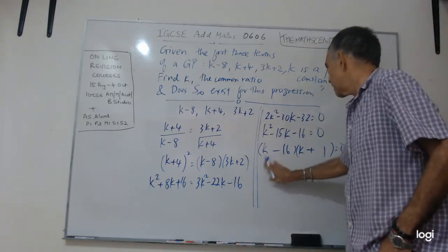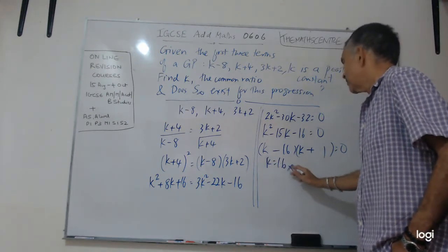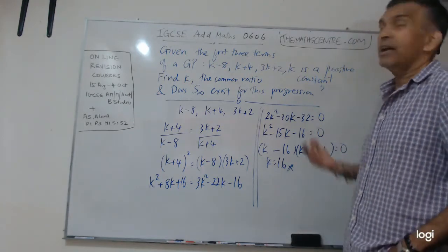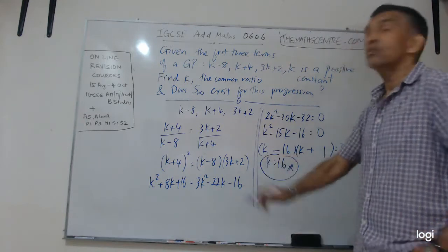So my K will be equals to 16. I didn't bother about K equals to minus 1. Why? Because I am told that K is a positive constant. So I have an answer K equals to 16.